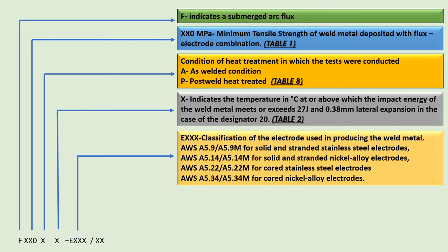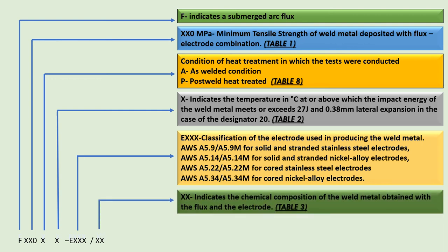After this, we have a designator starting with 'E', followed by details about the classification of the electrode used in producing the weld metal. These designators are from the AWS classifications SFA 5.9, SFA 5.14, SFA 5.22, and SFA 5.34. After this, we have a numeric designator which indicates the chemical composition of the weld metal obtained with the combination of the flux and electrode. These chemical composition details are given in Table 3 of SFA 5.39.